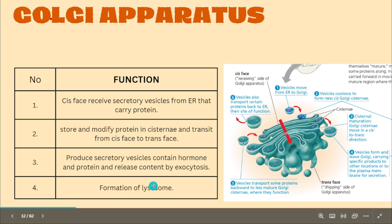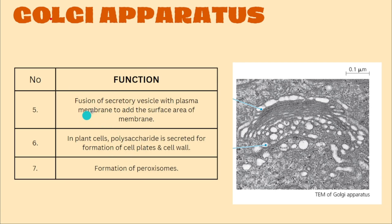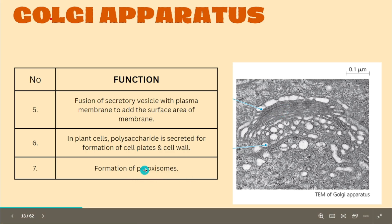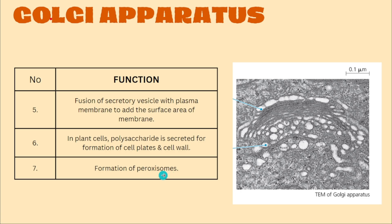The Golgi apparatus also plays a role in the formation of lysosomes. Another function is the fusion of secretory vesicles with the plasma membrane to increase the surface area of the plasma membrane. In plant cells, the Golgi apparatus also executes polysaccharides for the formation of the cell plate and cell wall. The last function is to form peroxisomes, which are another part of the cell — not a lysosome, but formed from the Golgi apparatus.